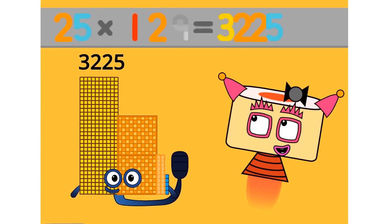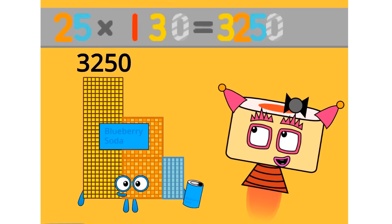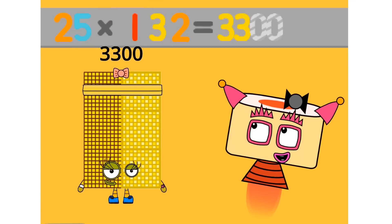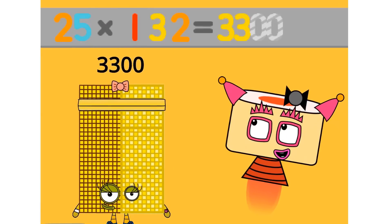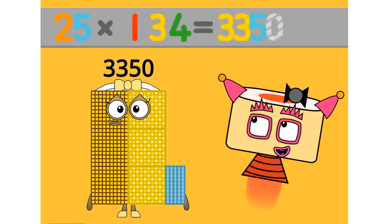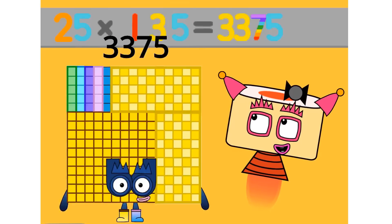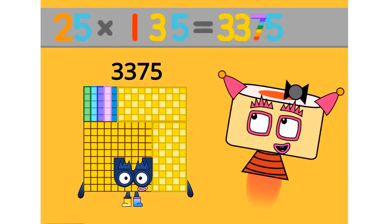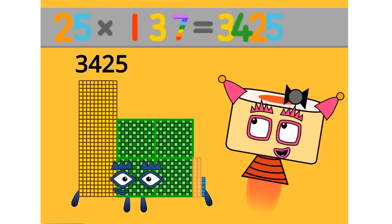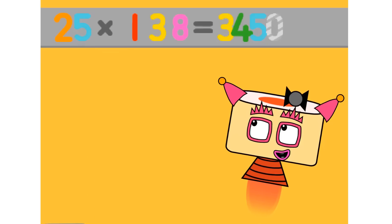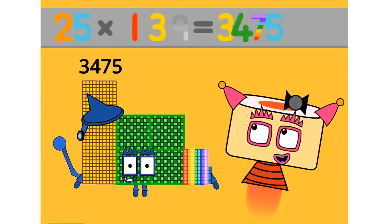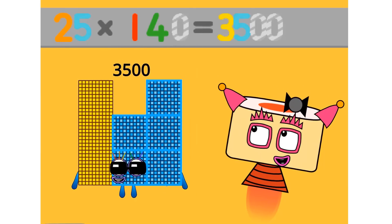25 times 130 equals 3250. 25 times 131 equals 3275. 25 times 132 equals 3300. 25 times 133 equals 3325. 25 times 134 equals 3350. 25 times 135 equals 3375. 25 times 136 equals 3400. 25 times 137 equals 3425. 25 times 138 equals 3450. 25 times 139 equals 3475. 25 times 140 equals 3500.